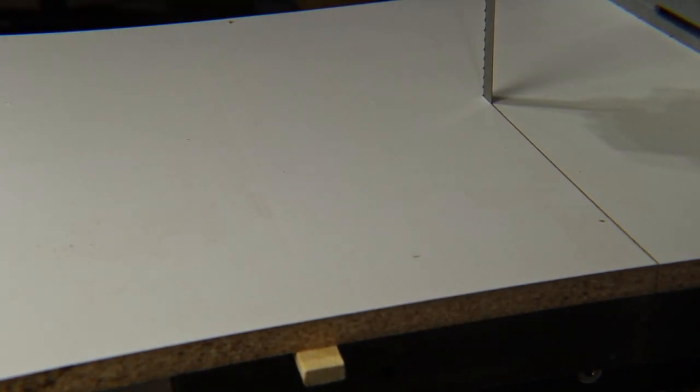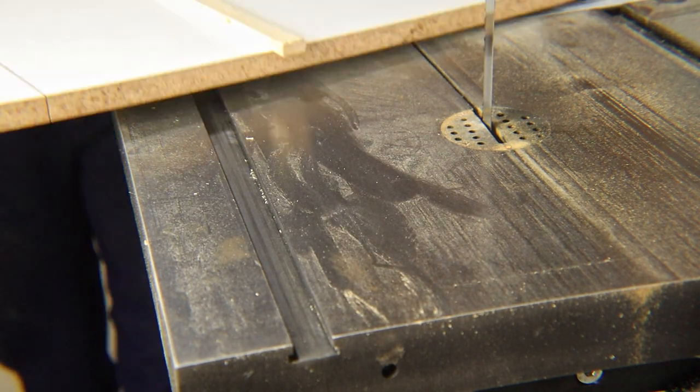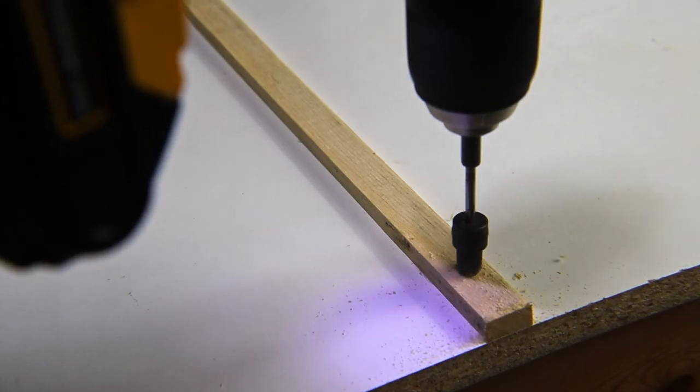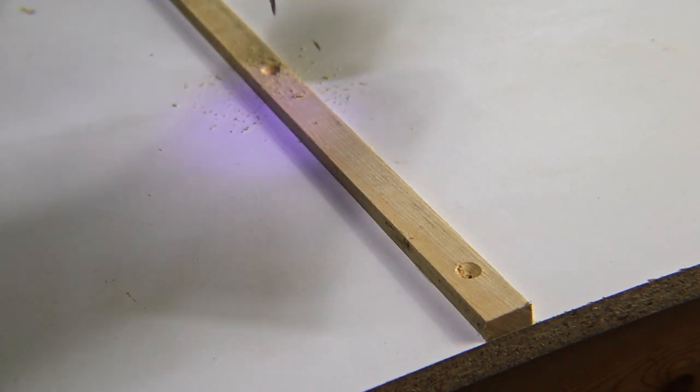The CA glue bonds really quick and it held together well enough to pull the jig off the table without detaching the runner. Now I can just add some countersunk screws to make sure it won't ever come off.